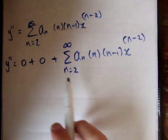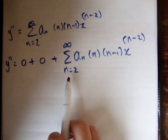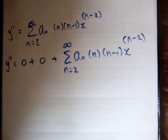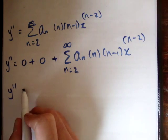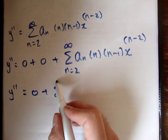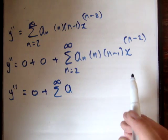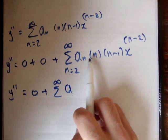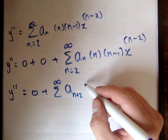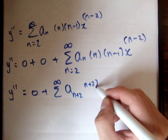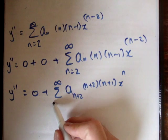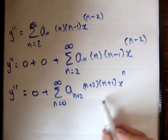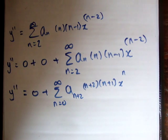The next thing we need to do is shift this term so it starts at n equals 2 and has power x to the n. So y double prime equals 0 plus the sum from n equals 0 to infinity of a sub n plus 2 times n plus 2 times n plus 1 times x to the n. The starting index becomes n equals 0 because all the n terms went up by 2, so the lower limit goes down by 2. Now we have our value for y double prime.